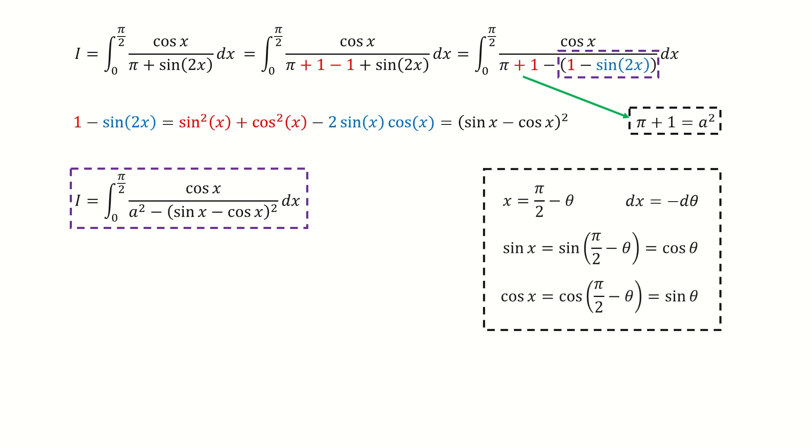Then we make a substitution. We let x equals pi over 2 minus theta. From the mirror property for the sine and cosine functions with respect to pi over 2, we get sine x equals cosine theta and cosine x equals sine theta.